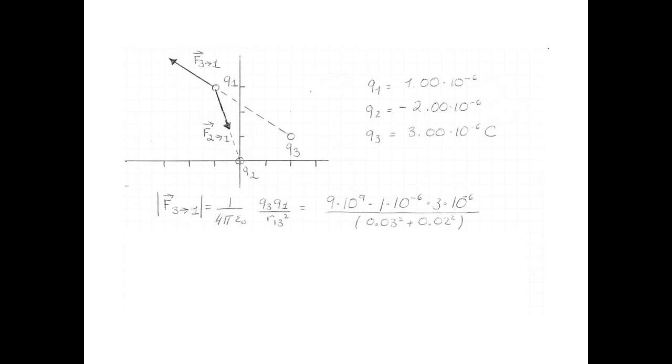q1 and q3 are 1 times 10 to the negative 6 and 3 times 10 to the negative 6 coulombs. And the distance between 1 and 3 is 3 centimeters across and 2 centimeters up. So r13 squared is 0.03 squared plus 0.02 squared.